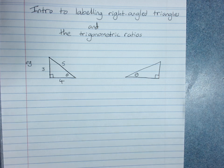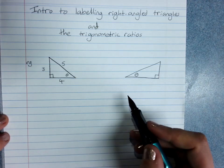This is an introduction and a review of labeling right-angled triangles and the trigonometric ratios for right-angled trigonometry.